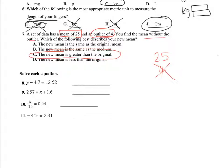And then number eight, solve each equation. So to solve this, I'm going to add 4.7 to each side. So 12.52 plus 4.7 is 17.22. Number nine, I'm going to subtract 1.6 from each side. So 2.97 minus 1.6 is x equals 1.37.